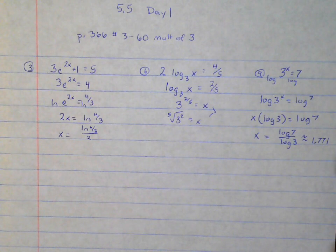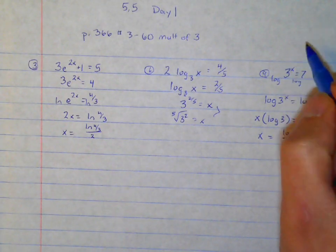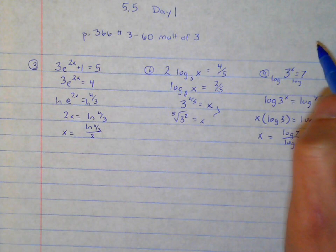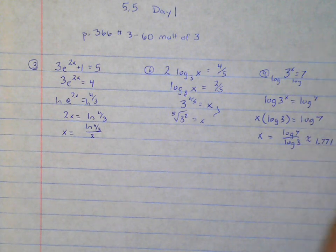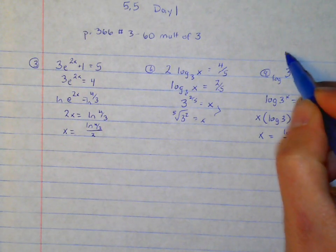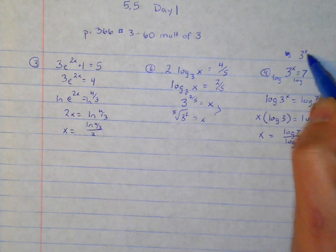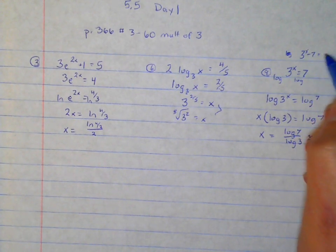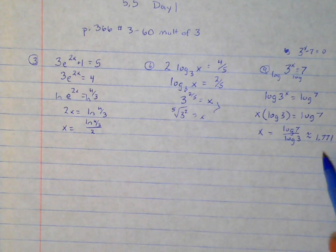You can use Desmos to do this. You can type this in Desmos, but also graphically — if you do 3 to the x minus 7, get it equal to 0 and see where it crosses, and you'll see exactly where it crosses.